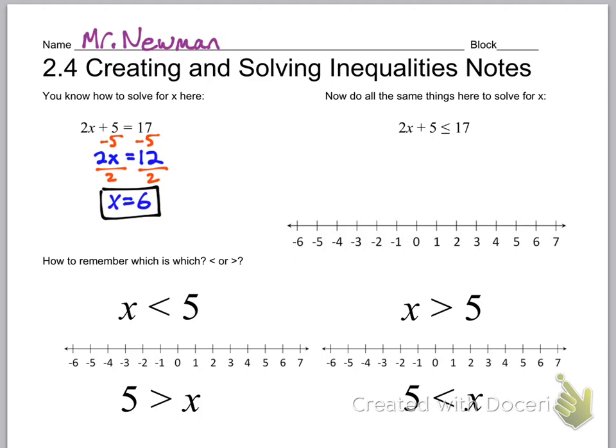Over here on the right, everything is almost exactly the same except instead of an equals sign I have a different symbol — less than or equal to. We'll talk about what that means in a moment, but let's just solve it. I'm gonna do the same first step: subtract by 5 on both sides, then do the exact same second step.